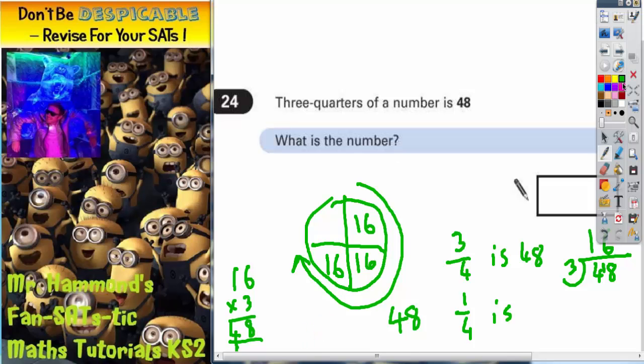Once we know that each quarter is 16, that will tell us, remember, all quarters have to be the same. So the final quarter that we haven't got anything in for must also be 16.